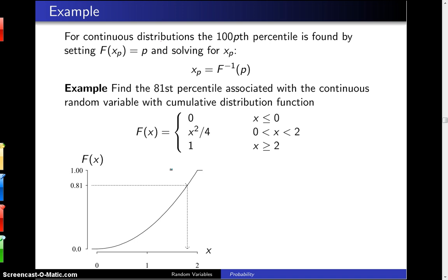For continuous distributions, the 100pth percentile is found by setting the cumulative distribution function at the percentile equal to p and solving for x sub p, which means that x sub p is equal to F inverse of p.